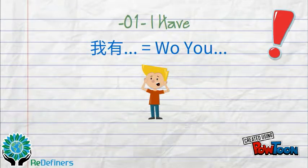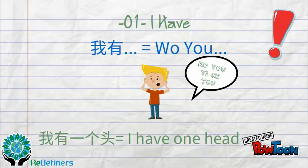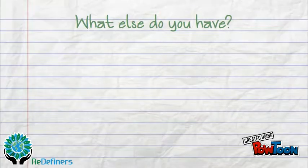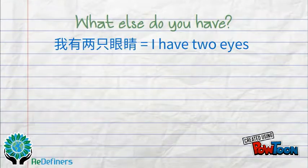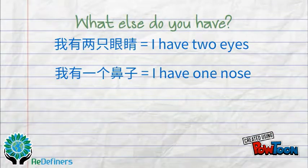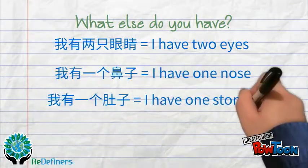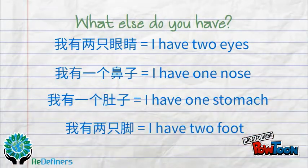For example, if you want to say you have a head, you can say 我有一个头. So, what else do you have? You can say: 我有两只眼睛 — I have two eyes; 我有一个鼻子 — I have one nose; 我有一个肚子 — I have one stomach; 我有两只脚 — I have two feet.